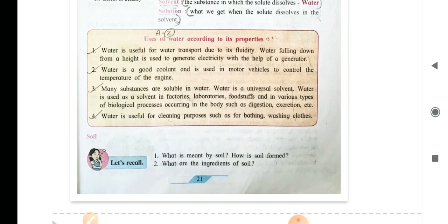Soil is a thin layer of material covering the earth's surface. How is soil formed? Soil is formed from the weathering of rocks.